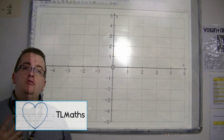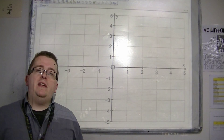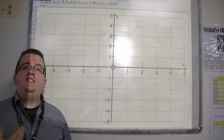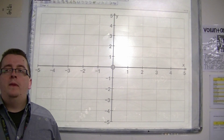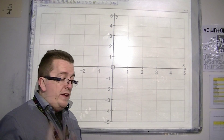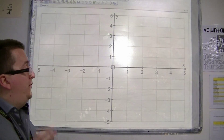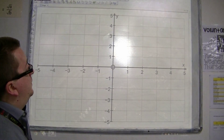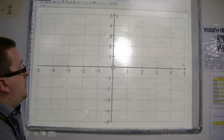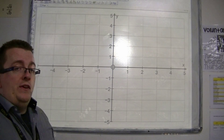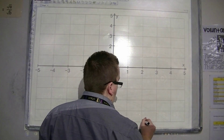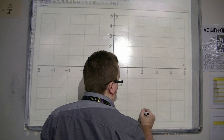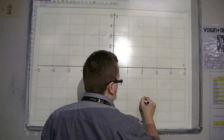There are some special graphs that you need to be aware of and need to be able to show. These represent specific lines. So let's look at these coordinates.